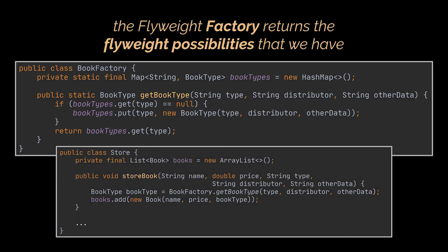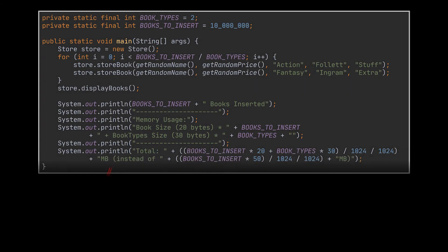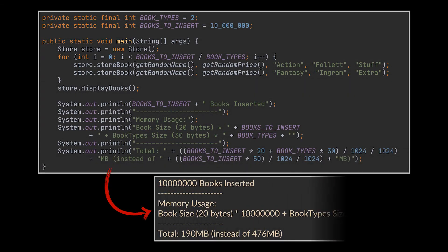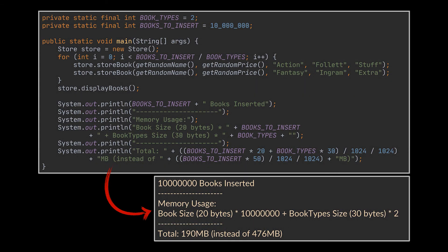Now in our Store class, instead of just creating and storing books, we first fetch the corresponding flyweight object for that book and then proceed by storing it. By doing that — and as you can see, if we consider that each attribute stored in our Book object has a size of 10 bytes — we managed to reduce our memory consumption by more than half.